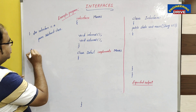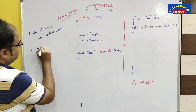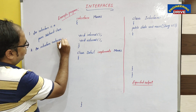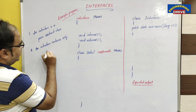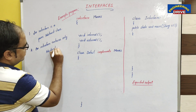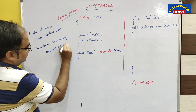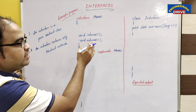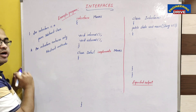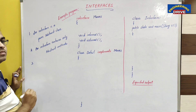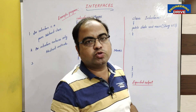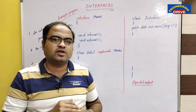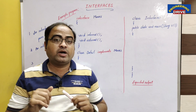An interface contains only abstract methods. That is point number two. Point number three: why is the concept of interface used in Java programming? Sometimes we want to create a class that will give only instructions — what to do, that's all — but not how to do it.